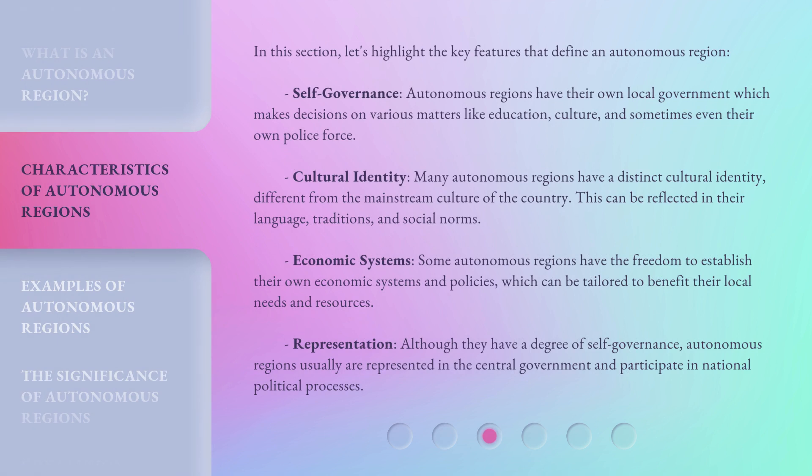Let's highlight the key features that define an autonomous region. Self-governance: autonomous regions have their own local government which makes decisions on various matters like education, culture, and sometimes even their own police force. Cultural identity: many autonomous regions have a distinct cultural identity, different from the mainstream culture of the country, reflected in their language, traditions, and social norms. Economic systems: some autonomous regions have the freedom to establish their own economic systems and policies, tailored to benefit their local needs and resources. Representation: although they have a degree of self-governance, autonomous regions usually are represented in the central government and participate in national political processes.